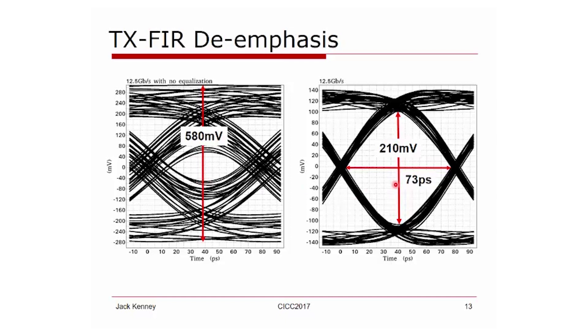With that transmit FIR from the previous page, you can see now that the vertical eye opening is 210 millivolts. The horizontal eye opening is 73 picoseconds. This is for 12.5 gig.